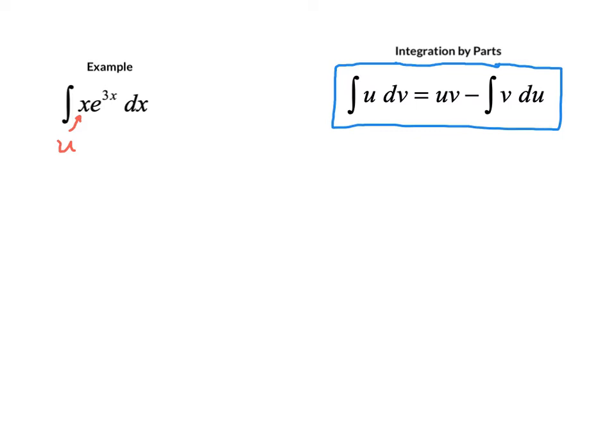And here, dv is what's left. Again, everything inside this integral has to be in one of these two factors. So dv here is going to be e to the 3x dx.